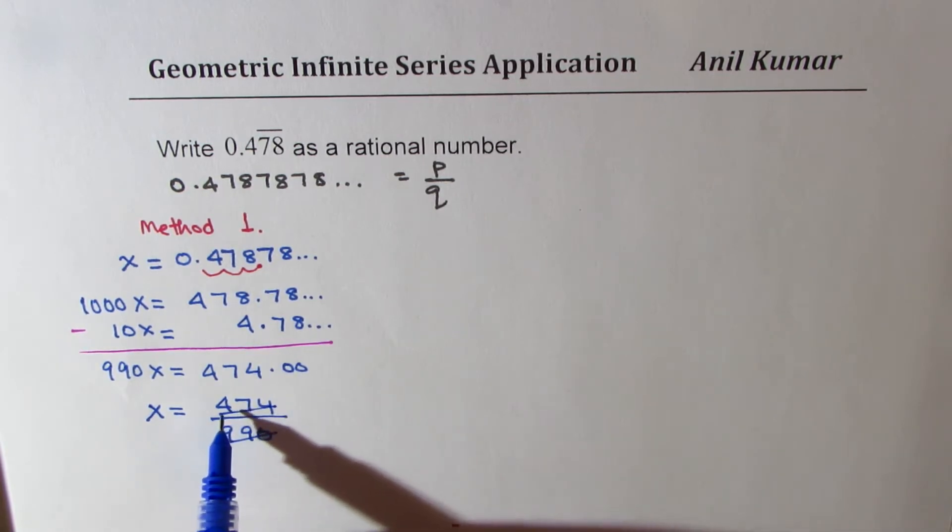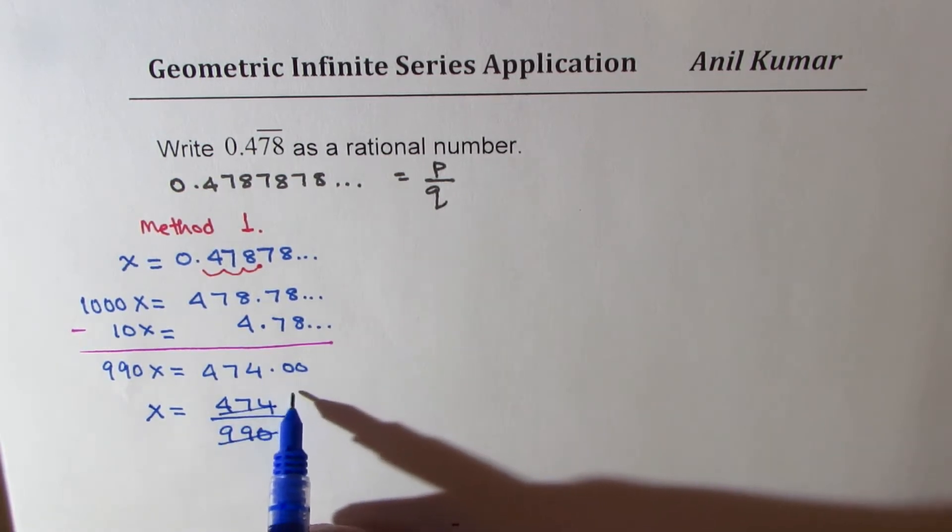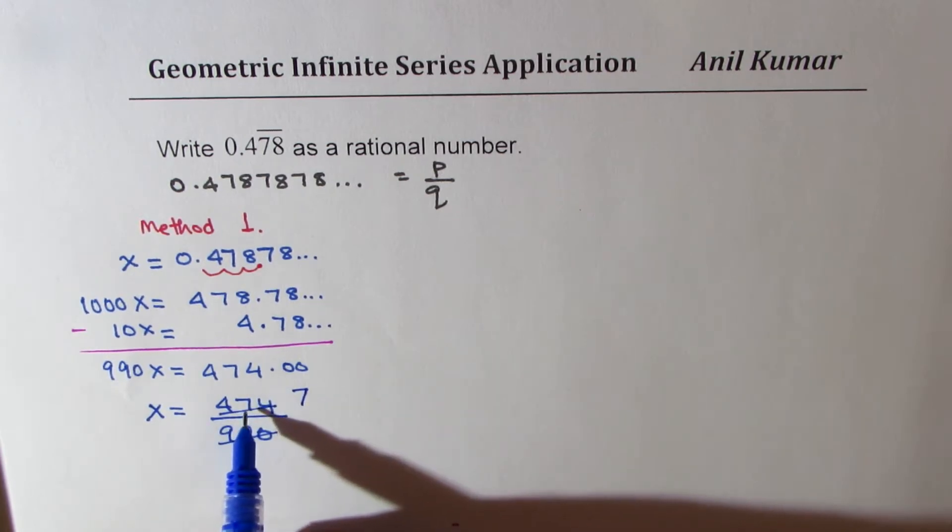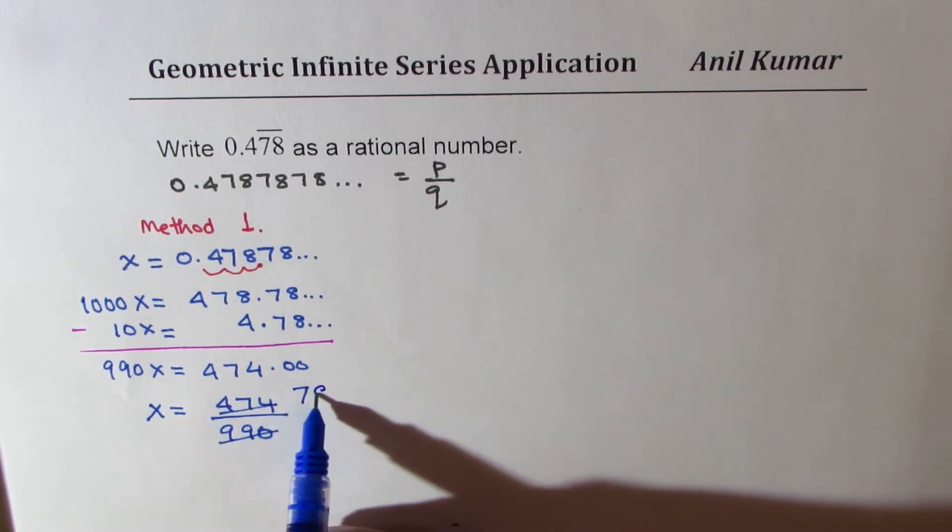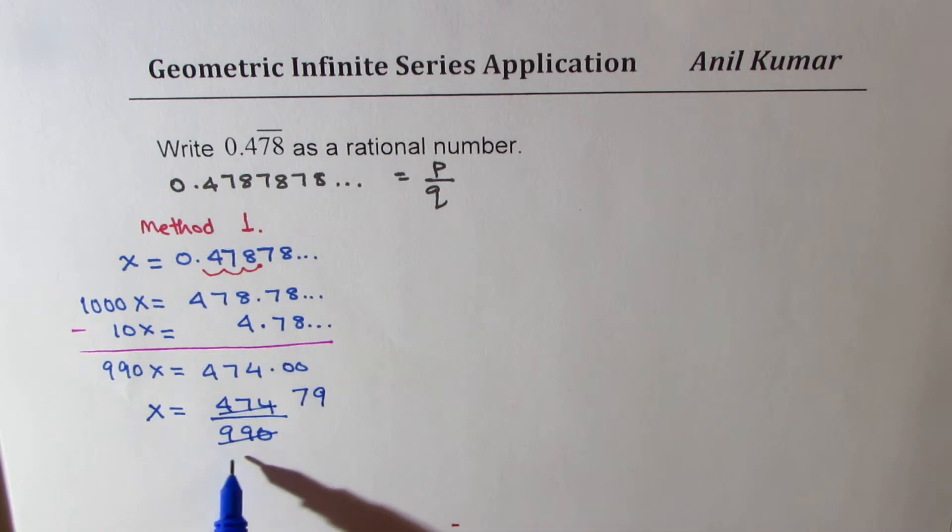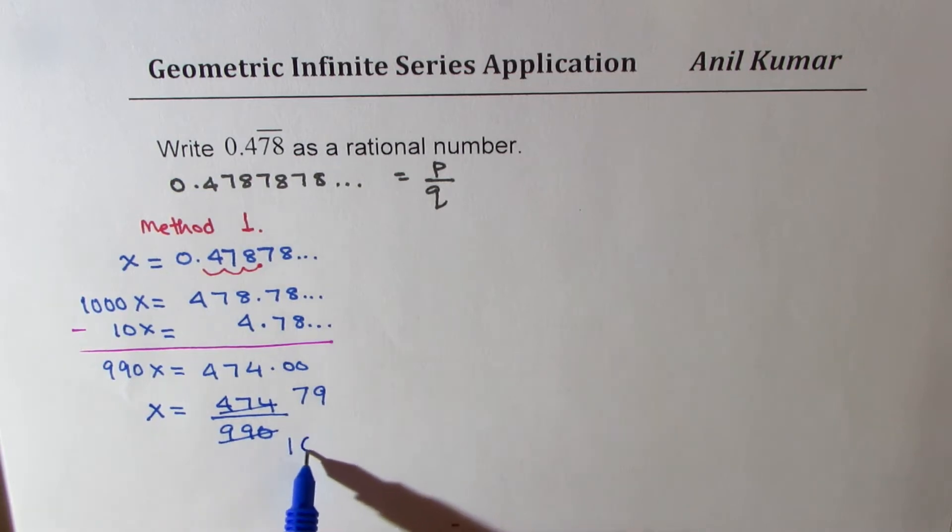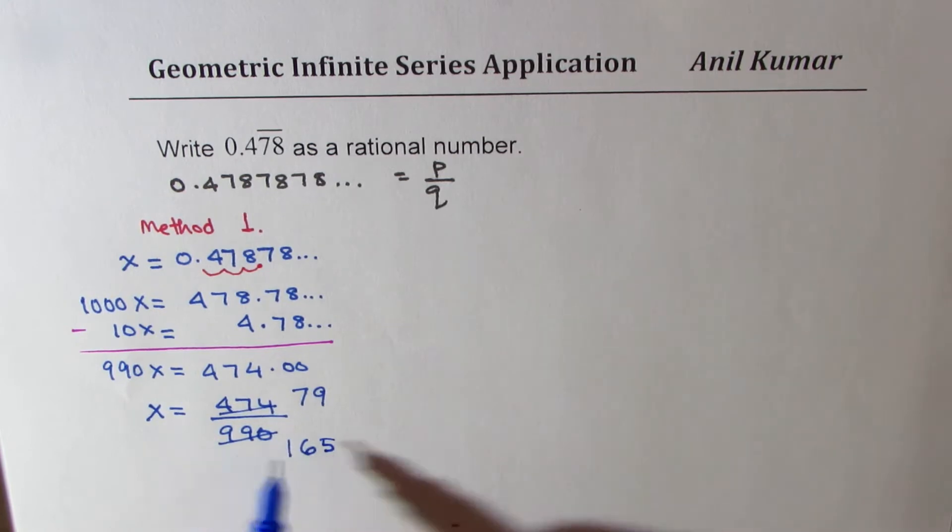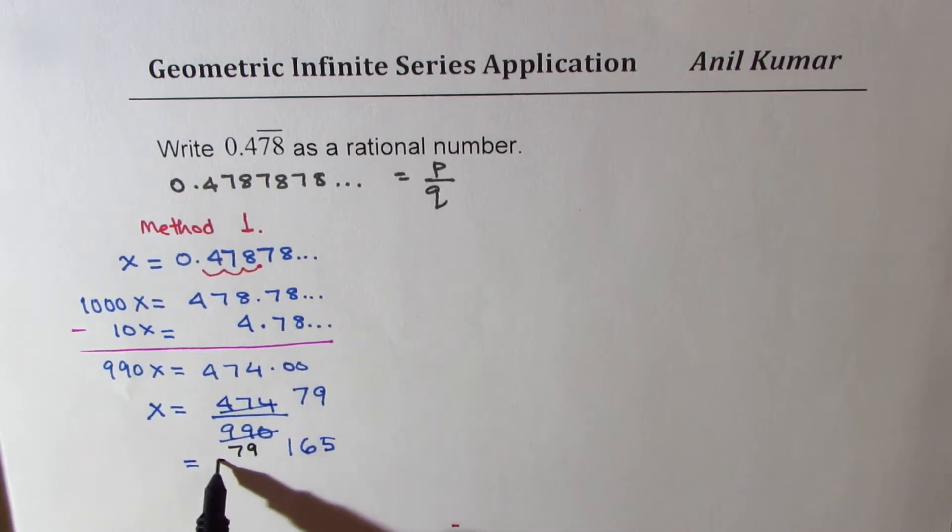6 times 7 is 42, so we get 54, which gives 9. And here 6 times 1 is 6, then we get 39, so 6 times 6 is 36, and then we get 30, which is 5. So we could write this as equal to 79 over 165.